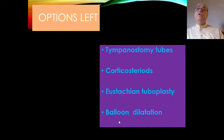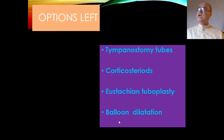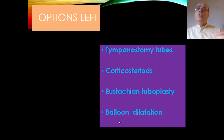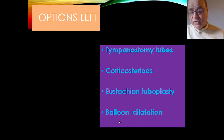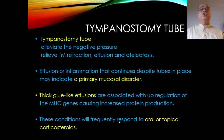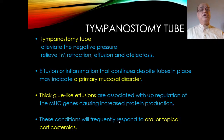These options are considered only after the underlying cause — whether rhinosinusitis, allergic rhinosinusitis, adenoids, nasopharyngeal carcinoma, or cleft palate — has been dealt with. If Eustachian tube dysfunction still persists, it means irreversible damage has occurred. Tympanostomy tubes alleviate the negative pressure in the middle ear and relieve tympanic membrane retraction, effusions, and atelectasis.